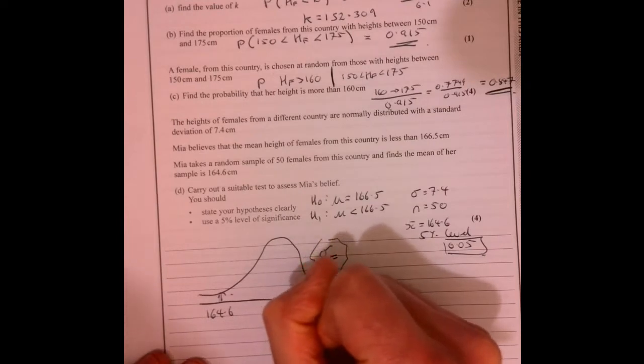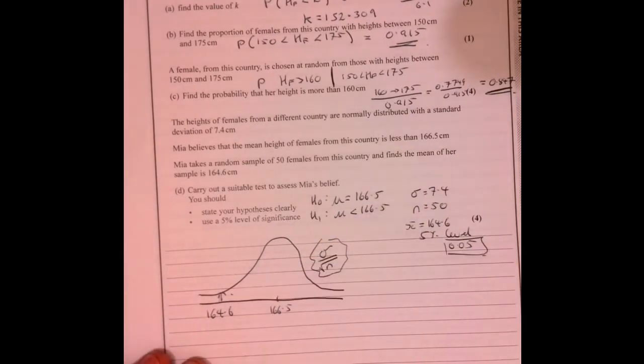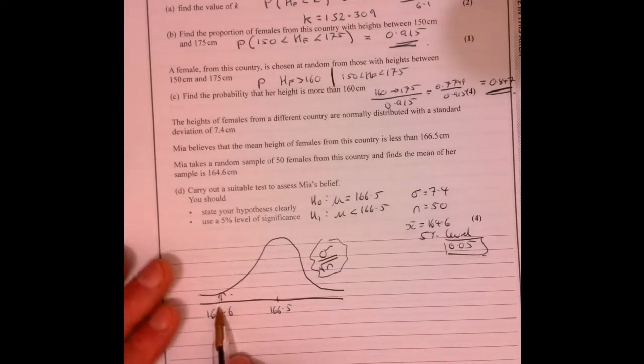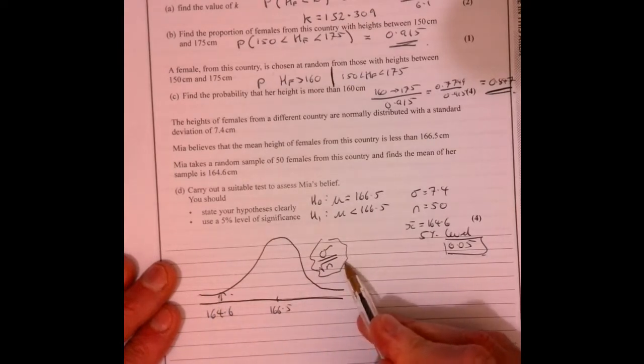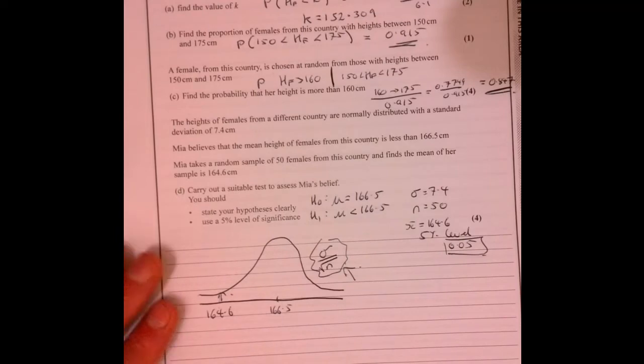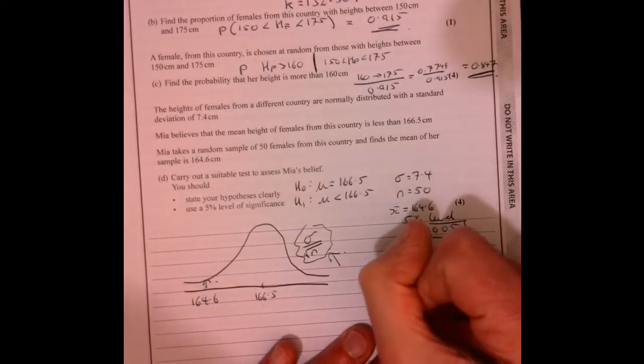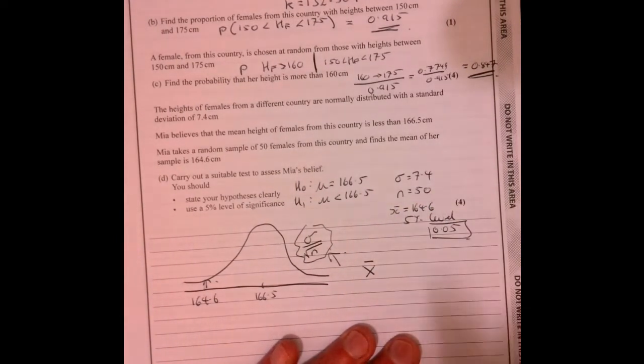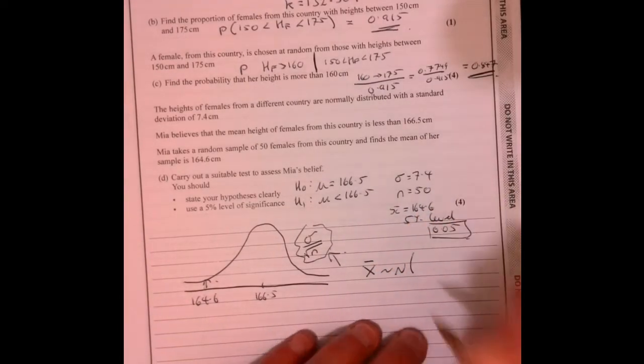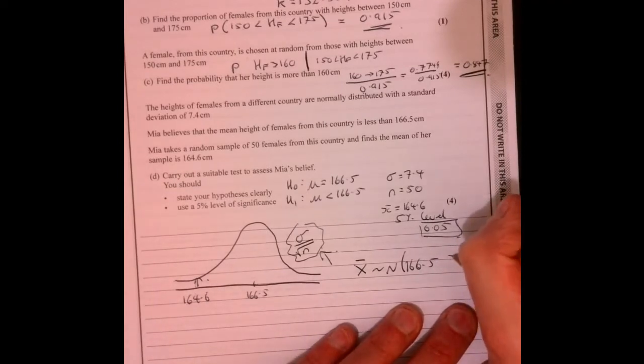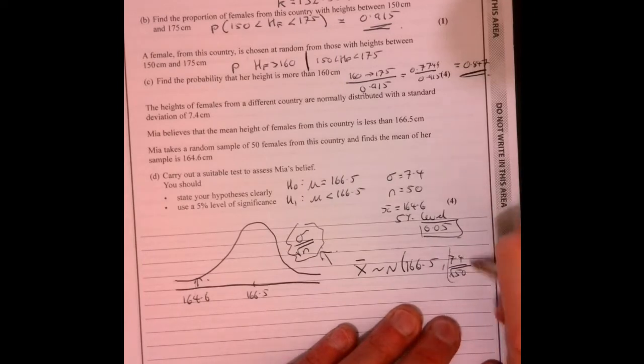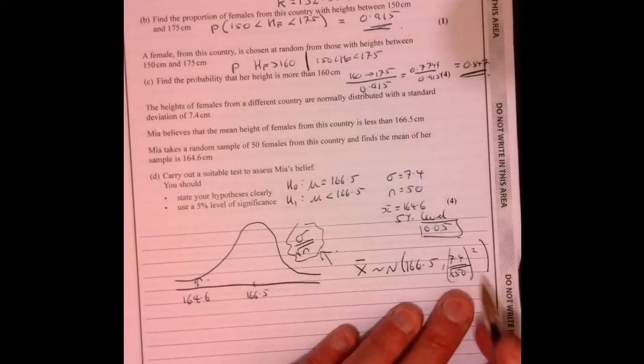Let's assume that it's still 166.5. We're trying to work out, is this unusual to be over here? So everything's going to be the same effectively, but we're working with this figure for our standard deviation. So we've got the distribution of the means follows a normal distribution, 166.5 and 7.4 over root 50, and it's that squared. That's the variance.